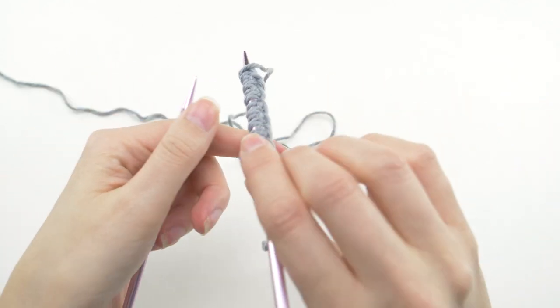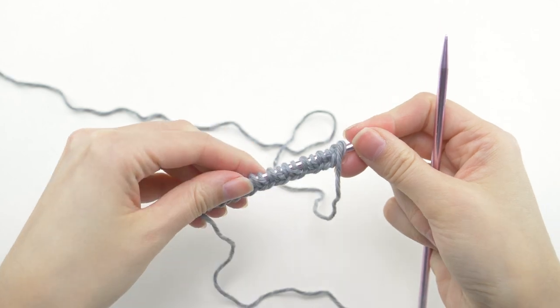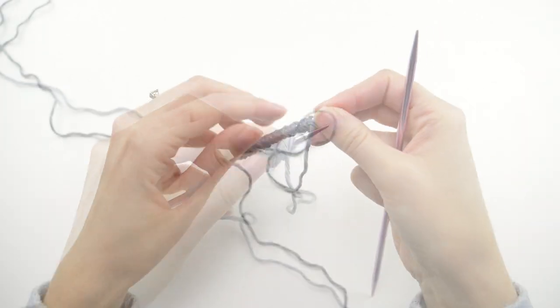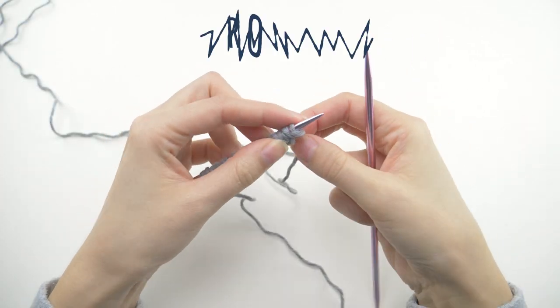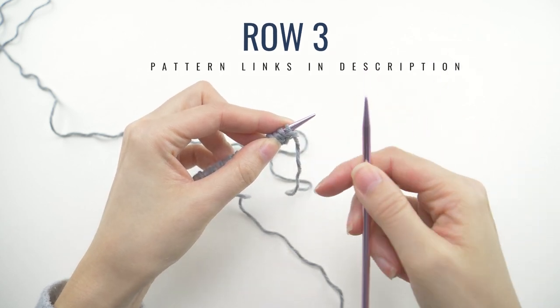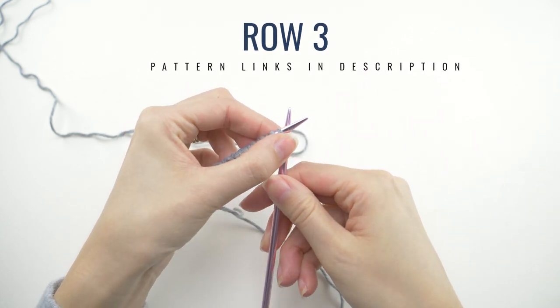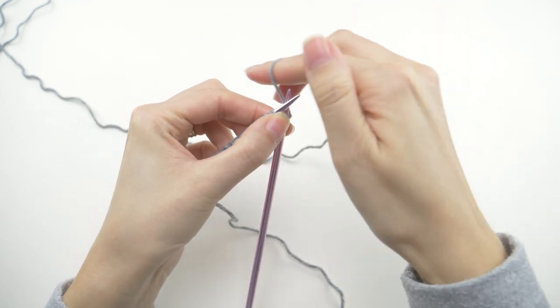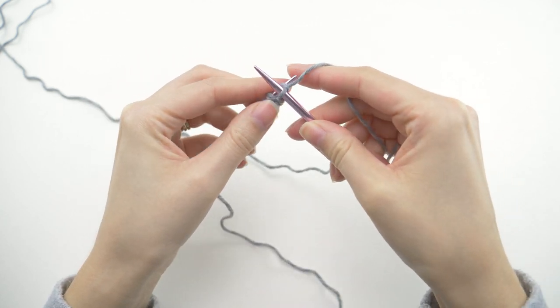Then flip your work, and we'll start row 3, which is really similar to the last row. We're just changing a couple things at the beginning and the end. Now for this one, you'll knit the first stitch. Again, we're always doing that.